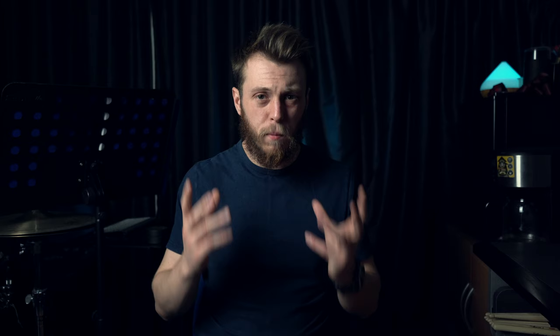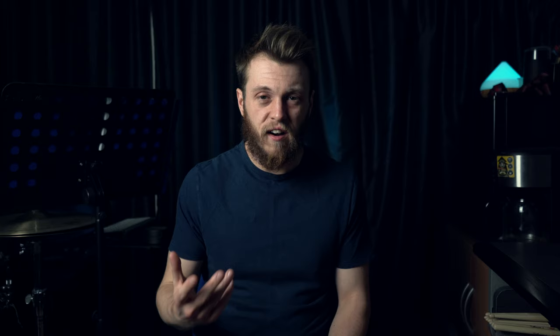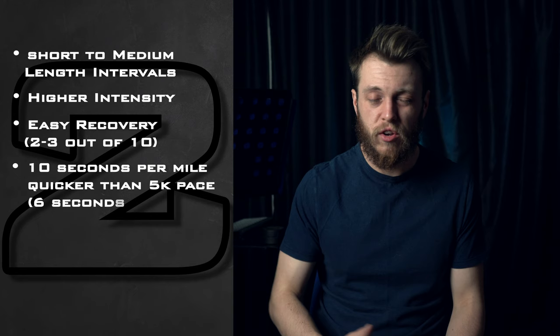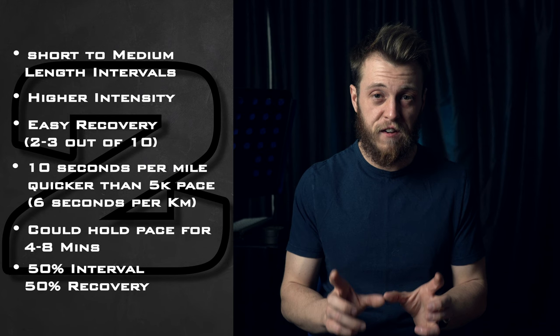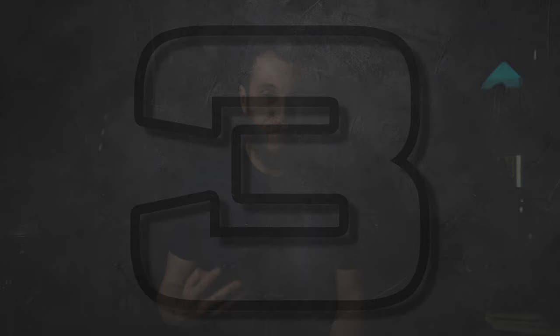Aim two is slightly shorter but more intense — five times three minutes or even ten times two minutes. This is where you push higher into the red zone, not maximum pace. This is often called high intensity interval training or HIIT — you go hard, not maximum, and then recover. Your recovery will be more like two to three out of ten, or you may even want to walk. Your interval-to-recovery ratio will be closer to 50-50 here, compared to about 75% interval and 25% recovery in aim one.